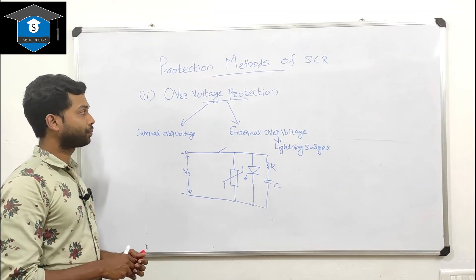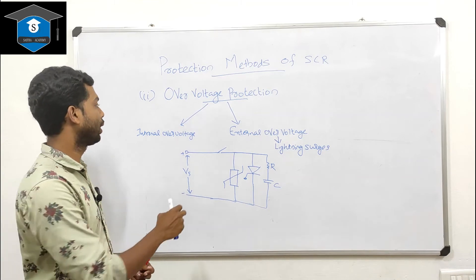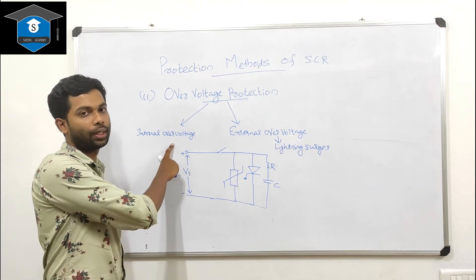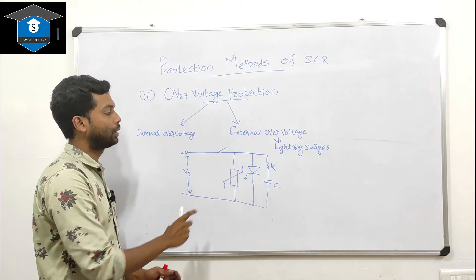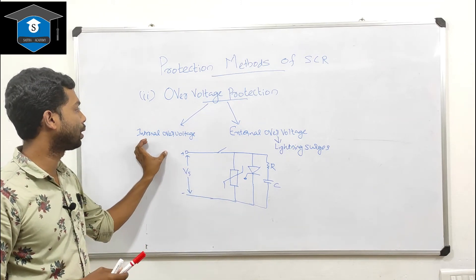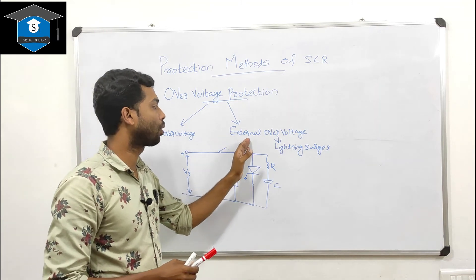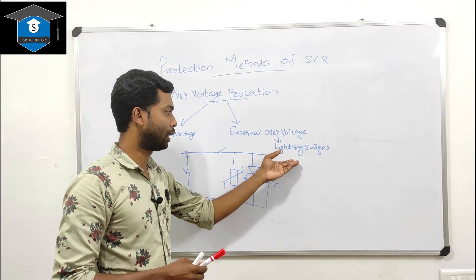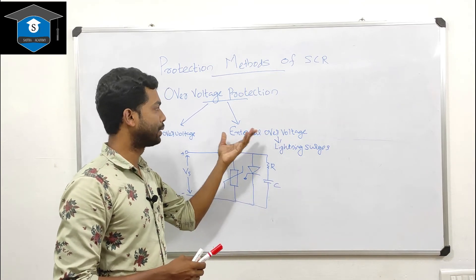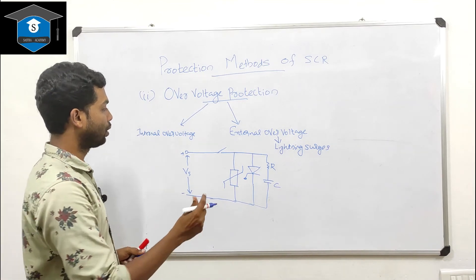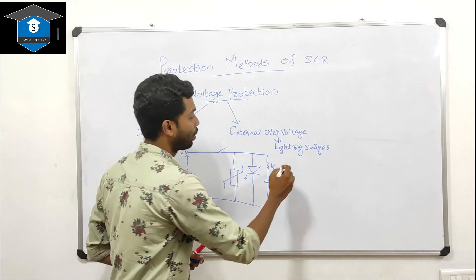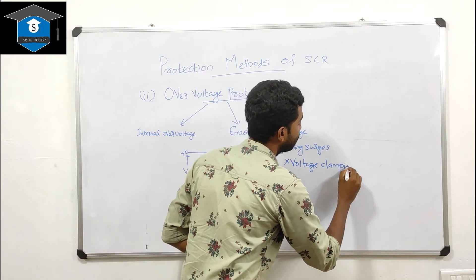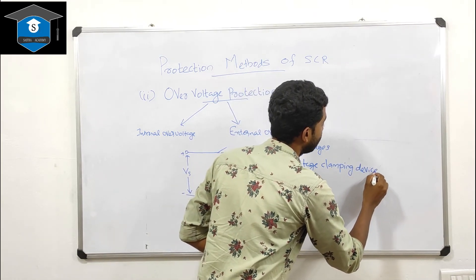Next is over-voltage protection. Over-voltage can be classified as internal over-voltage and external over-voltage. Internal over-voltage is caused by SCR inductance and series circuit inductance. External over-voltage is caused by external sources, for example lightning surges of very high magnitude. To protect against this, we use a voltage clamping device.